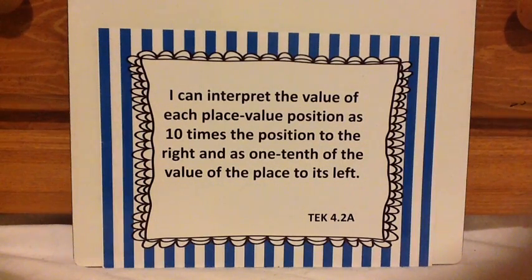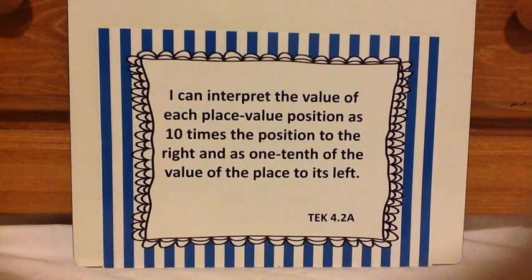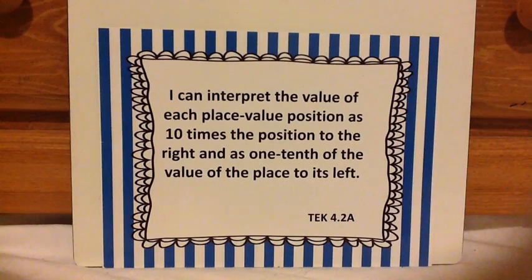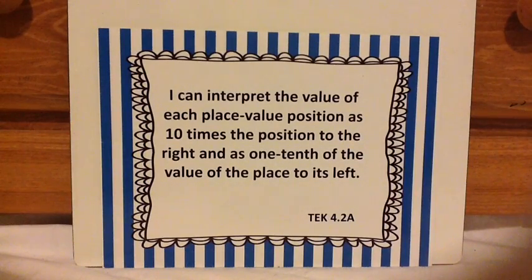Hi scholars, let's look at TEEC 4.2a. I can interpret, which means understand and be able to figure out the value of each place value position as 10 times the position to the right and as one-tenth of the value of the position to its left. This is a little hard to understand. I will show you a place value chart so the TEEC will make more sense. So let's get started.